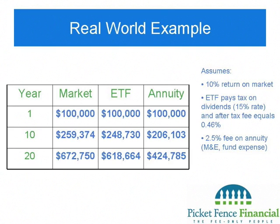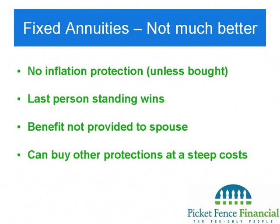Let's look at a real-world example. Assume a 10% market return, a $100,000 deposit into an ETF tracking the market, and a $100,000 into an annuity that also tracks the market. The ETF pays dividends taxed at 15% with an after-tax fee of 0.46%, while the annuity carries a 2.5% fee. After 20 years, the annuity grows to only about $424,000, whereas the ETF grows to approximately $618,000 — a substantially larger amount. There's really no reason to buy a variable annuity.